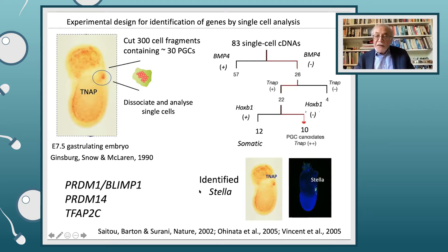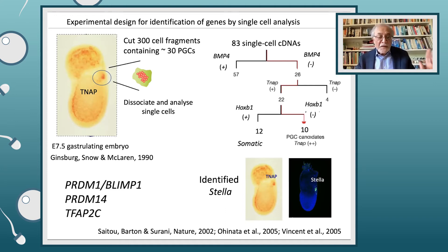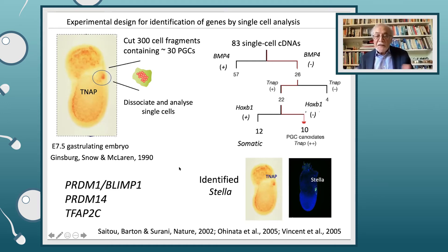Subsequently, it turned out that there are three genes essential for the identity of primordial germ cells: PRDM1, PRDM14, and TFEC. Liz Robertson had also done a lot of work in this area and found PRDM1 to be one of the crucial genes in the specification of primordial germ cells. So these three genes set aside this small group of cells as germ cells and give them their identity.